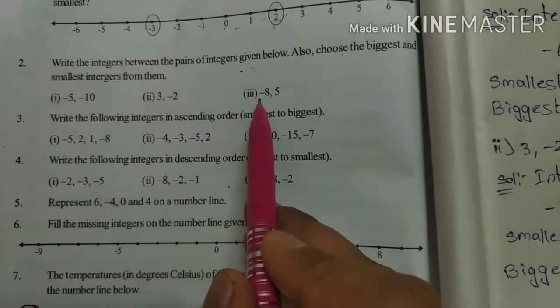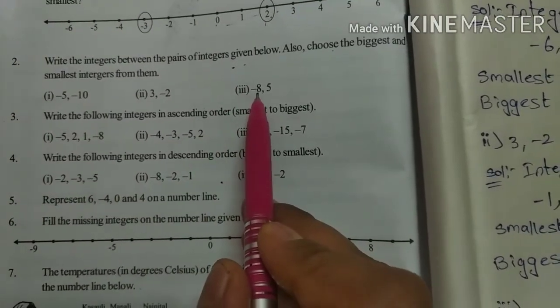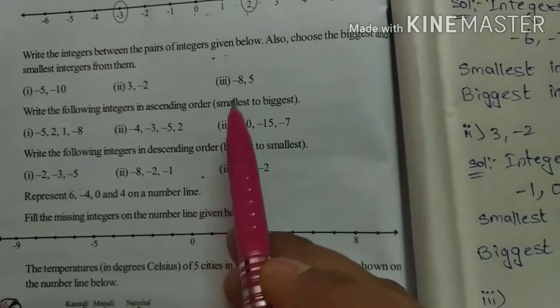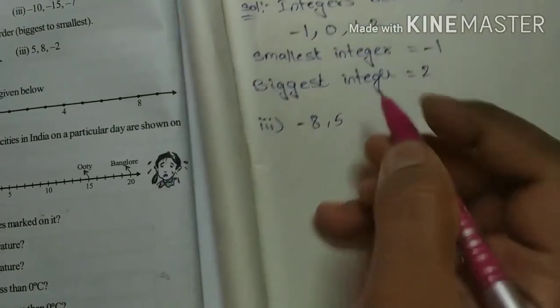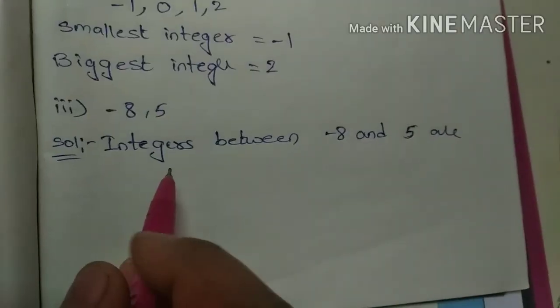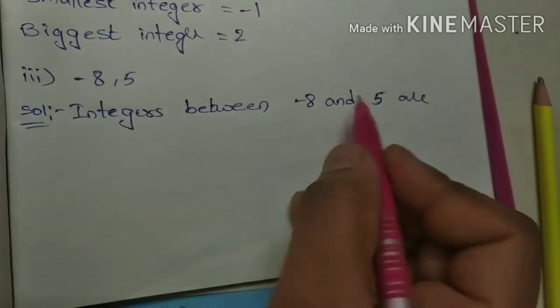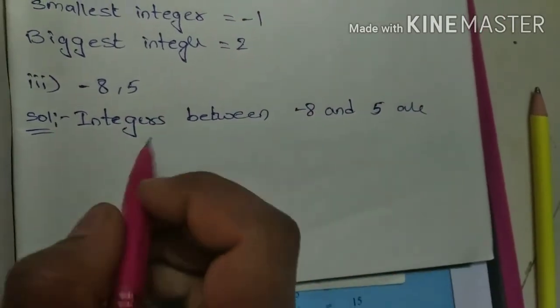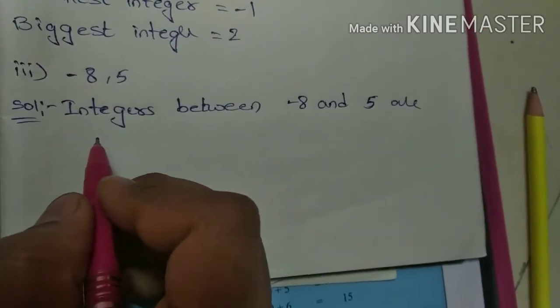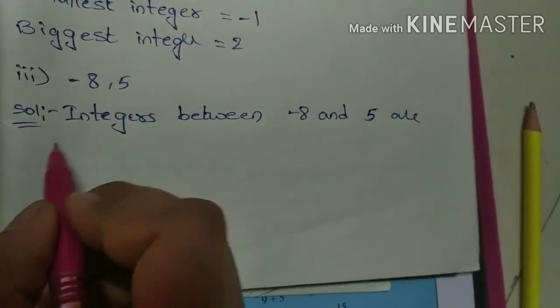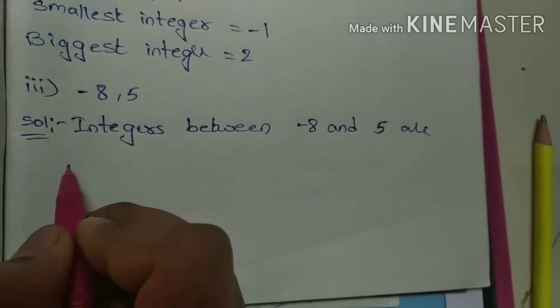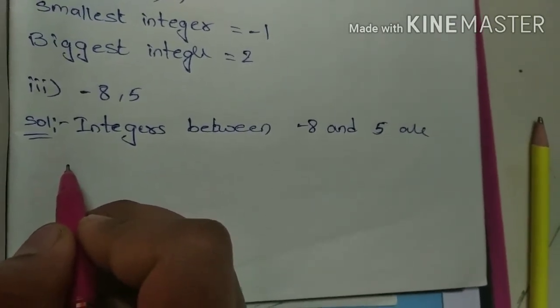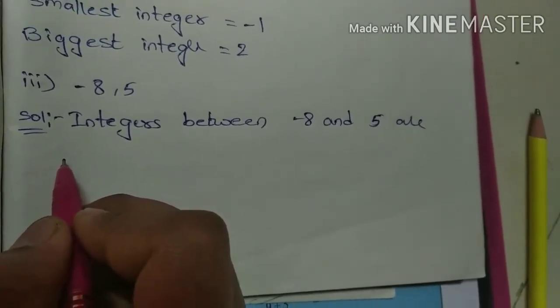The third one: minus eight, five. So write here: minus eight, five. Start from the negative sign, minus eight. After which number will come — minus nine or minus seven? Minus seven only. Don't write minus nine, it is wrong. Because with a negative sign, the bigger the number, the smaller the integer. So after minus eight comes minus seven.